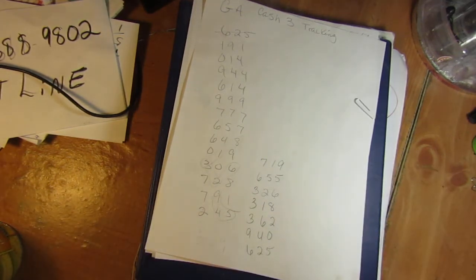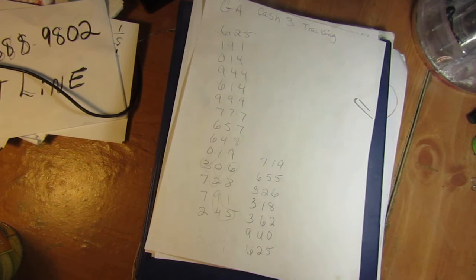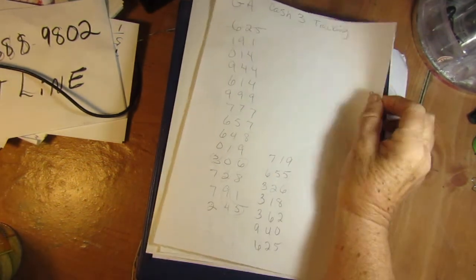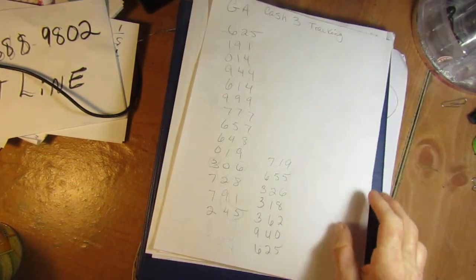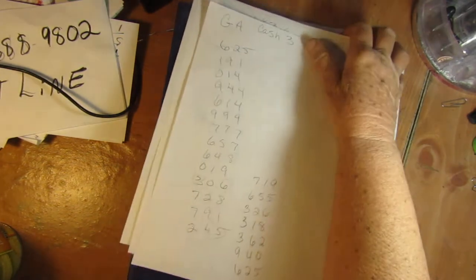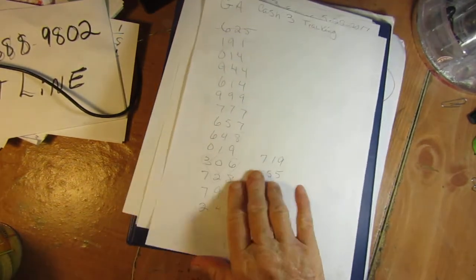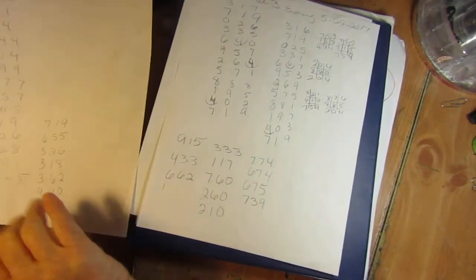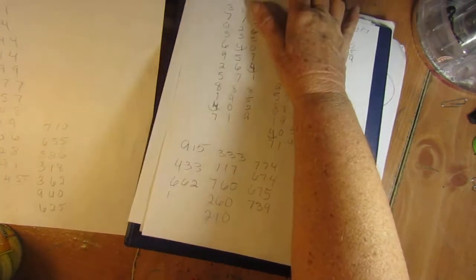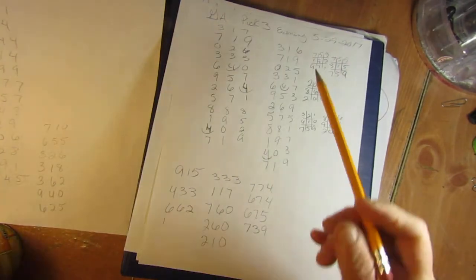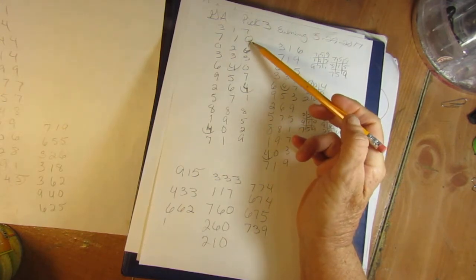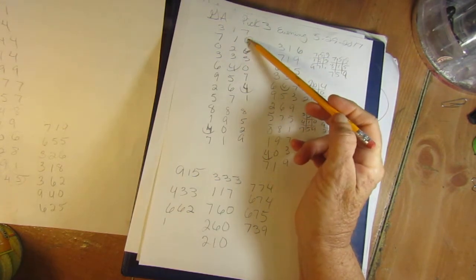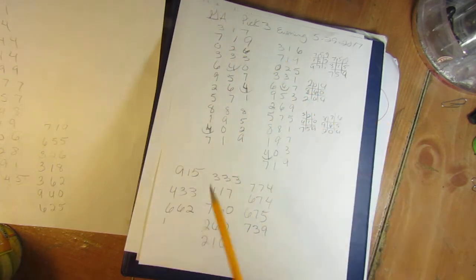So let's do Georgia. I didn't hit Georgia this morning, but we're gonna try to make up for it now. I'm gonna start out with Pick 3 with y'all. Y'all's midday draw was 7-1-9.